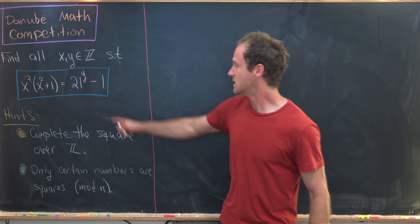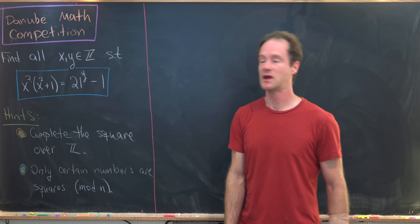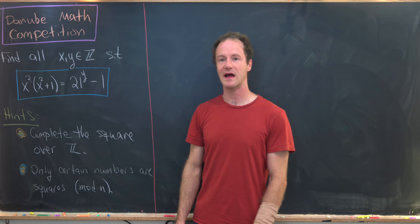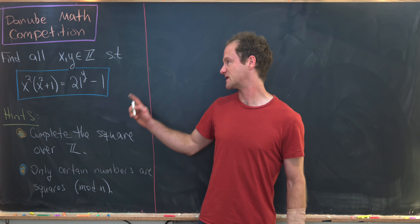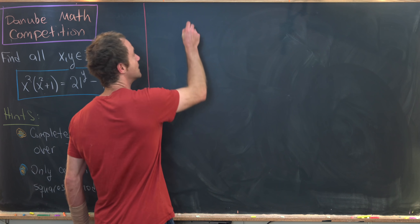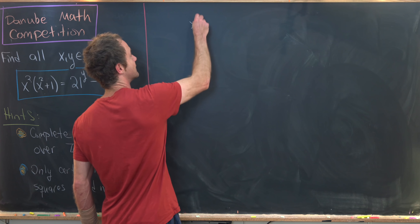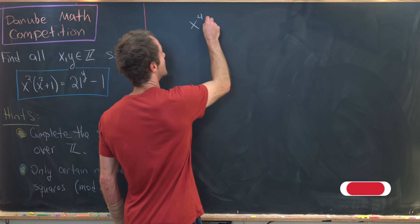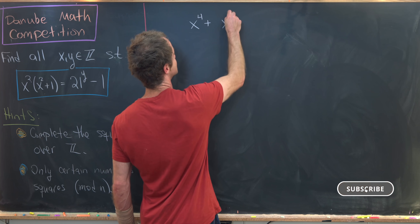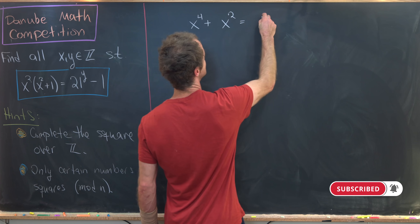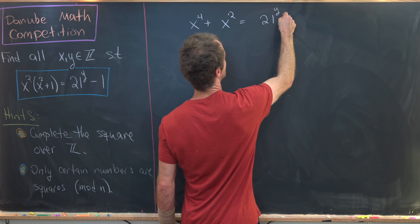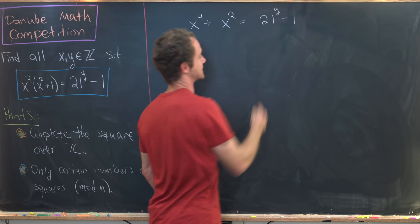Let's take this equation and multiply out the left hand side, leaving the right hand side for now. That gives us x to the fourth plus x squared is equal to 21 to the y minus 1.